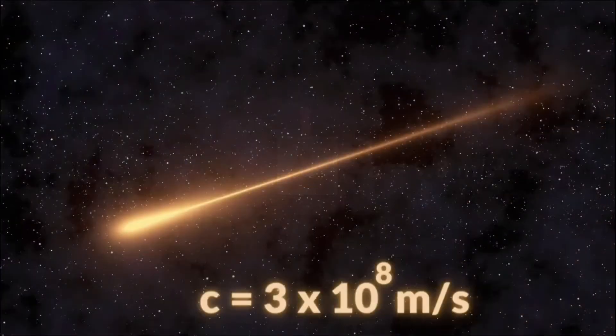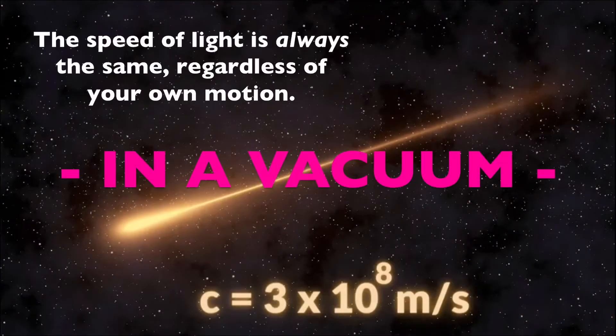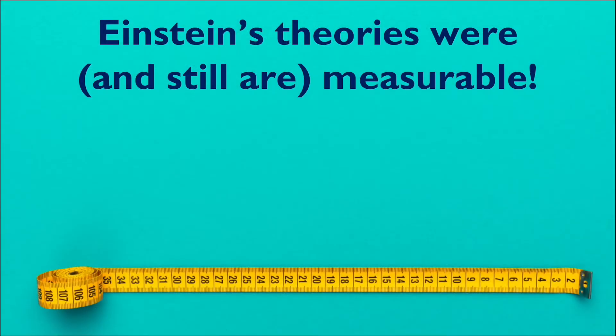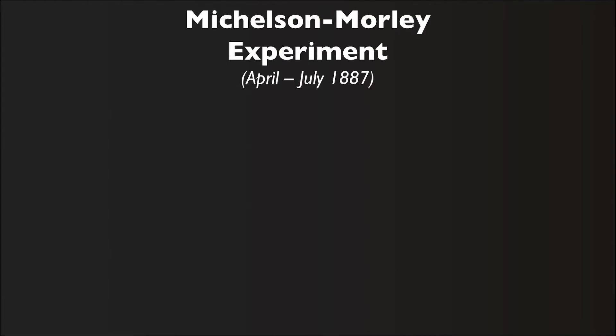The other implication is that the speed of light in a vacuum is always the same, regardless of your own motion. In fact, Einstein's theories were and still are measurable. They are supported by evidence.